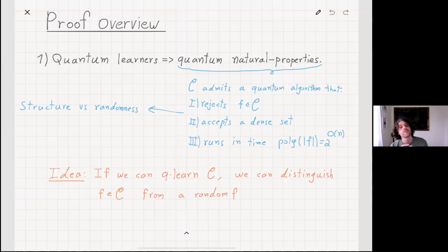The idea is that we have three steps. The first step talks about taking quantum learners and obtaining quantum natural properties from them. So what are quantum natural properties? The way I like to think about it is these are algorithms that can detect and distinguish between structure and randomness.